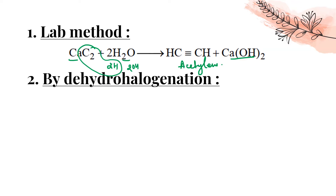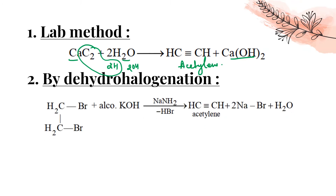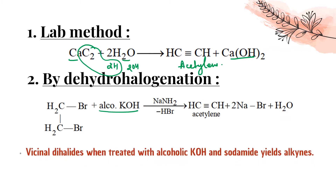The second method is dehydrohalogenation. A vicinal dihalide when treated with alcoholic KOH followed by sodamide (NaNH₂) yields an alkyne — for example, acetylene.